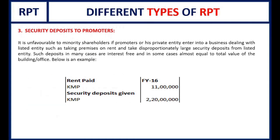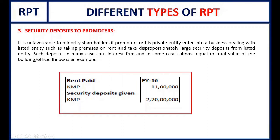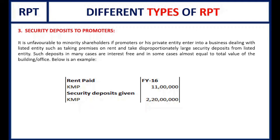The third scenario is security deposits to promoters. Sometimes promoters rent office premises, land, or a building to the listed company, so a security deposit is natural. But in some cases the security deposit does not make sense. In one example, rent paid to KMP is 11 lakhs per year while the security deposit is 2 crores — almost 20 times the annual rent. Normally a security deposit is 5 to 6 times the monthly rent. The interpretation is that the promoter bought a property and is using the excess security deposit, which is essentially an interest-free loan of 2 crores that promoters can utilize.